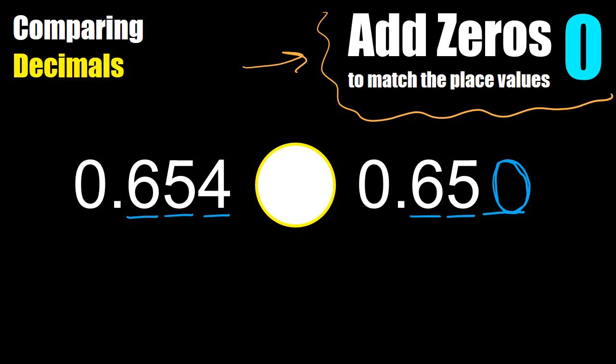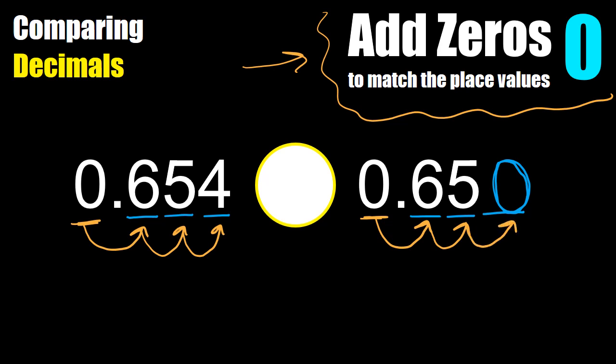Now we compare place by place. The ones place — both the same. The tenths place — both the same. The hundredths place — both the same. In the thousandths place, four is greater than zero, so I'm going to use the greater than sign.